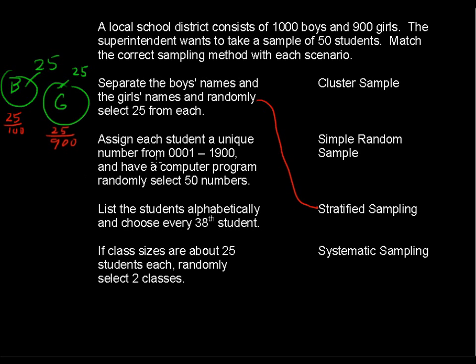The second scenario. Assign each student a unique number from 1 to 1,900. I'm going to stop right now. If you see that, that's a good indicator that it's probably going to be simple random sample. But, of course, read on.